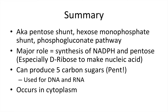As a summary, you should know the other names of the pentose phosphate pathway. You may see it described as the pentose shunt, the hexose monophosphate shunt, or the phosphogluconate pathway. The major role is going to be synthesis of NADPH and pentose sugars, and it occurs in the cytoplasm. Short and sweet — there are really just a couple of things you need to know about this one.